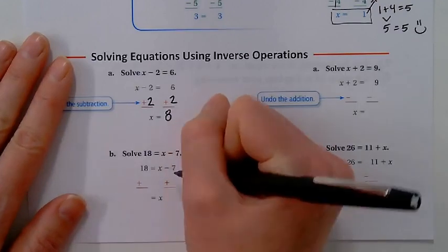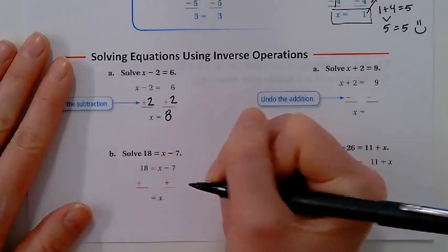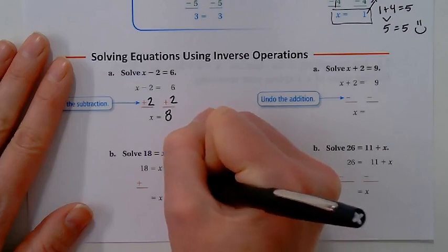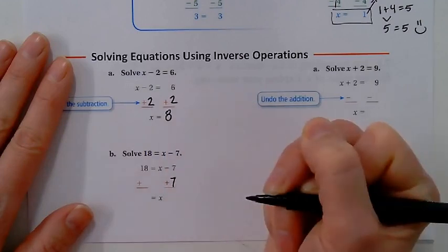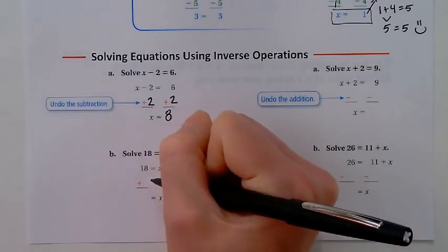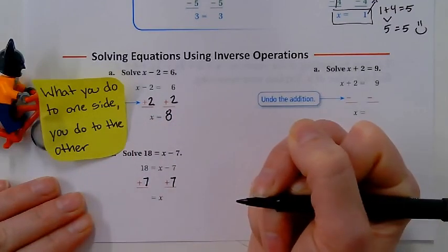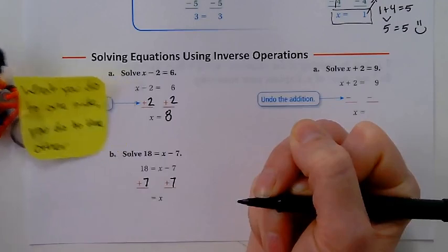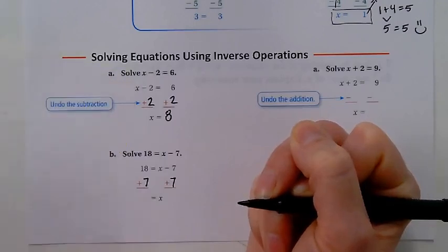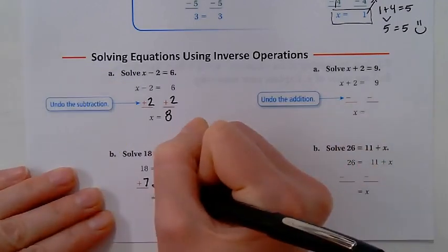So we have to get it alone first. Well, the opposite of subtraction is addition. I've got a 7 here. That 7 is going to come right down. Batman knows—what I do to one side I've got to do to the other. Okay, 18 plus 7 is—good job, probably all said 25.